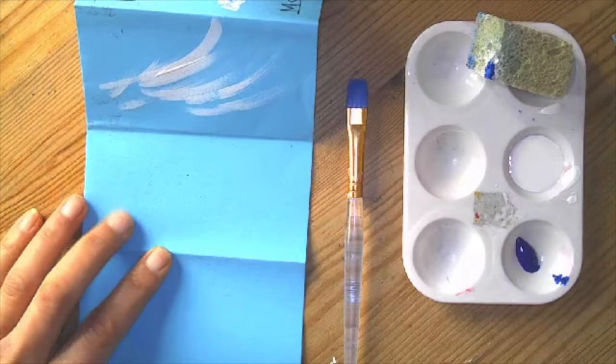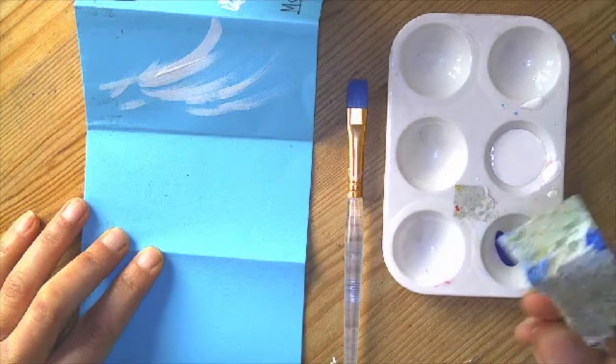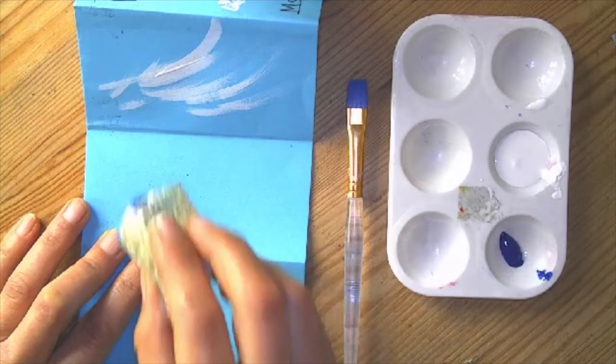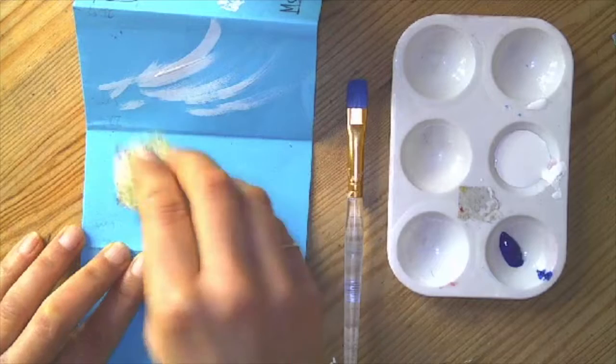And then for the alto cumulus, I'm going to take my sponge, and I'm going to basically get a little bit of white paint on it. Once again, these are puffy clouds.